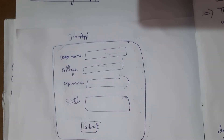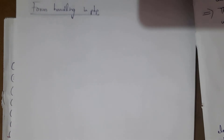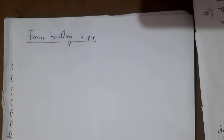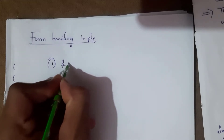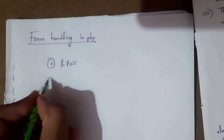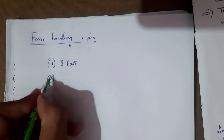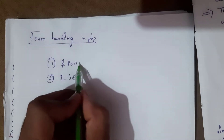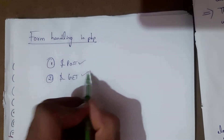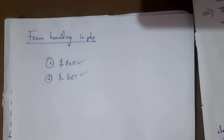There are two methods to design a form in PHP: the first one is the POST method and the second one is the GET method. These POST and GET methods are used to design forms. First I am going to discuss the POST method.